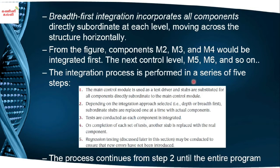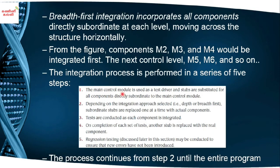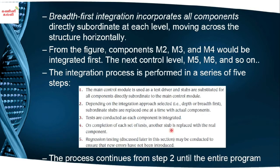The integration process is performed in a series of five steps. The main control module is used as the test driver, and stubs are substituted for all components directly subordinate to the main control module. Depending on the depth-first or breadth-first approach, subordinates are replaced one at a time with actual components. Tests are conducted as each component is integrated. On completion of each set of tests, another stub is replaced with the real component, and regression testing may be conducted to ensure new errors have not been introduced.